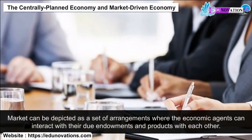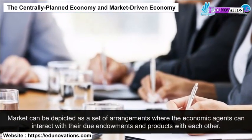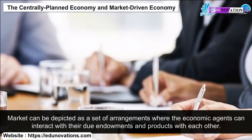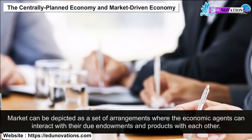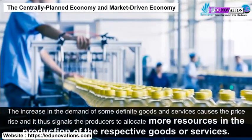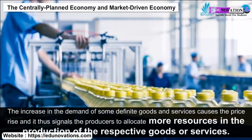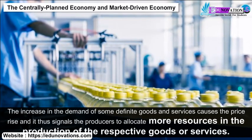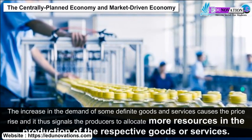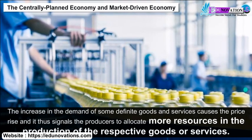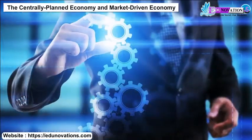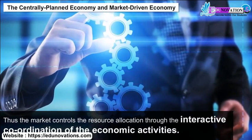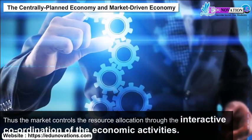A market can be depicted as a set of arrangements where economic agents interact with their endowments and products with each other. An increase in the demand for certain goods and services causes prices to rise, signaling producers to allocate more resources to the production of those goods or services. Thus, the market controls resource allocation through the interactive coordination of economic activities.